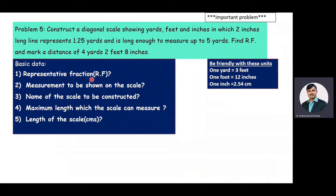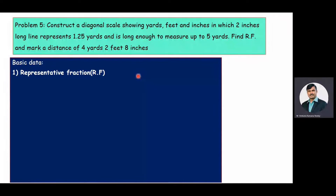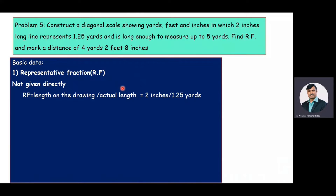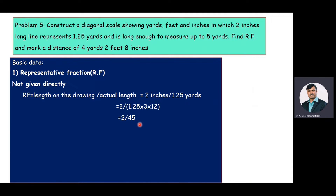The first question is representative fraction — it is a ratio of length on the drawing to actual length. Here the length on the drawing is 2 inches and its actual length is 1.25 yards. Both numerator and denominator must be in the same units, so we convert the denominator to inches. Since 1 yard equals 3 feet and 1 foot equals 12 inches, after simplifying, the RF value equals 2 by 45.